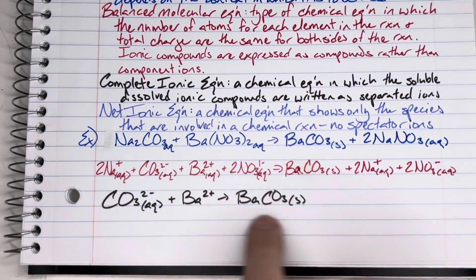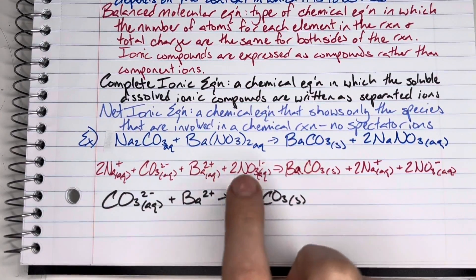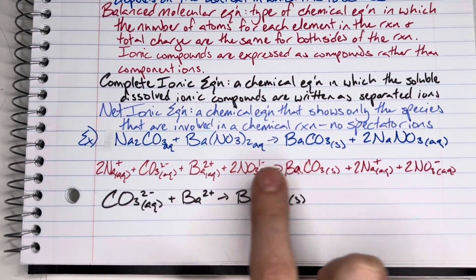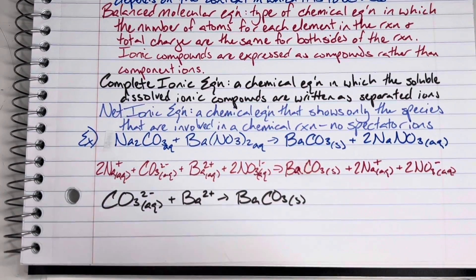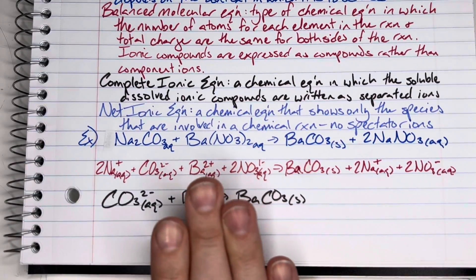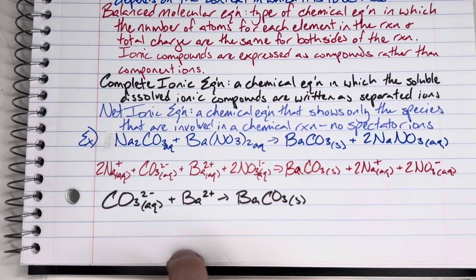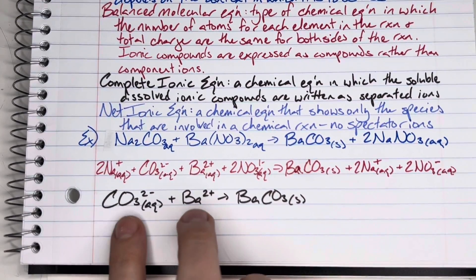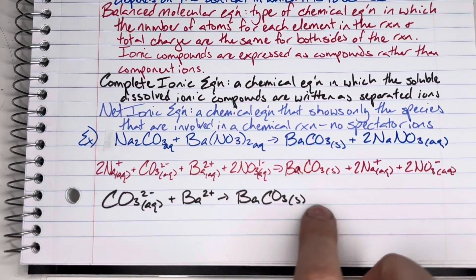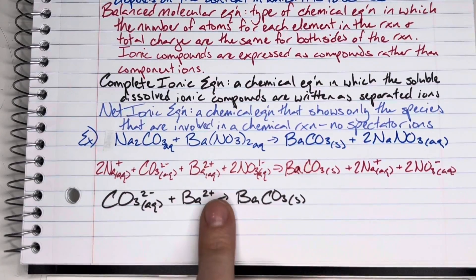So sodium is no longer written in this reaction at all. Also, the nitrate—same thing. It was dissolved at the beginning and dissolved at the end; it effectively stayed in the same exact situation. So I eliminate that as well. The only things that changed are going to be the carbonate and the barium. They went from aqueous to solid, and so those are the only things that are left over and the only things that I would include in my net ionic equation.